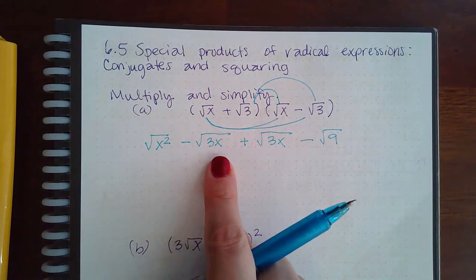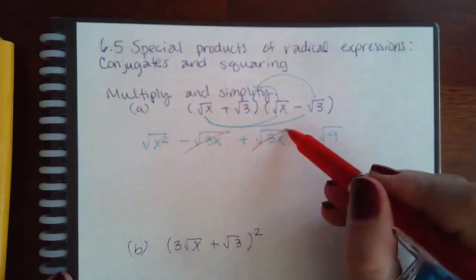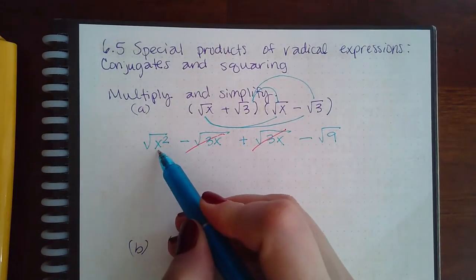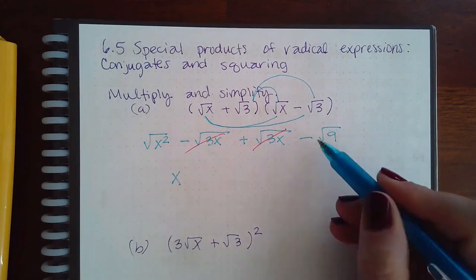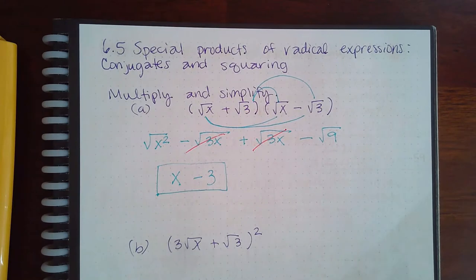Now negative square root of 3x and positive square root of 3x will just cancel out. But the square root of x squared is x and the square root of 9 is 3. And so this is the final expression that I end up with.